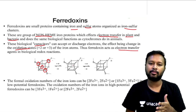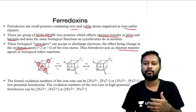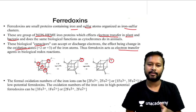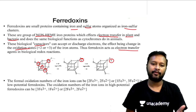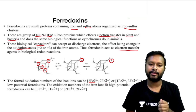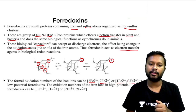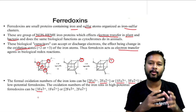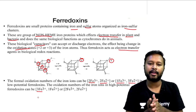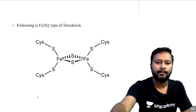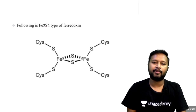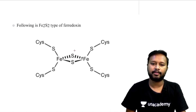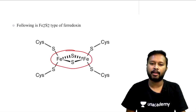The formal oxidation number of iron can be two Fe³⁺ and two Fe²⁺, or one Fe³⁺ and three Fe²⁺ — these are the low-potential ferrodoxins. In high-potential ferrodoxins, the number of irons in the higher oxidation state is more. There is also an Fe₂S₂ type of ferrodoxin where two iron and two sulfur atoms are joined in a cluster, which is not cubane-like.